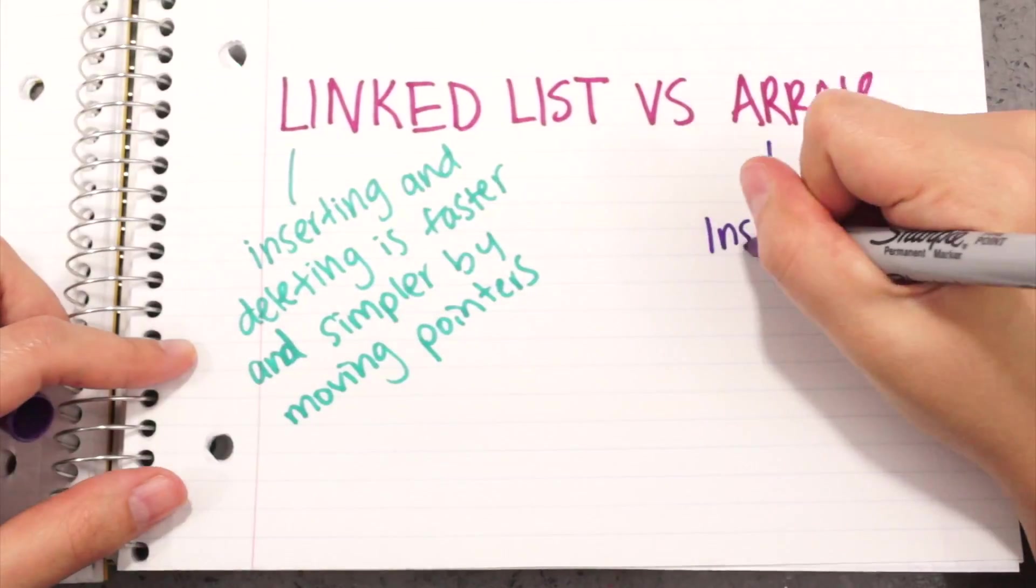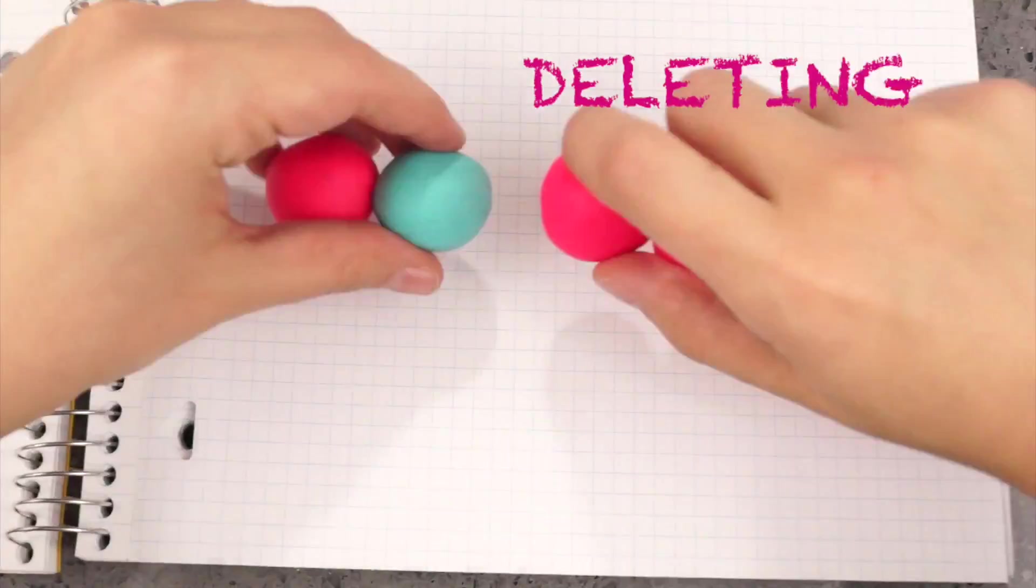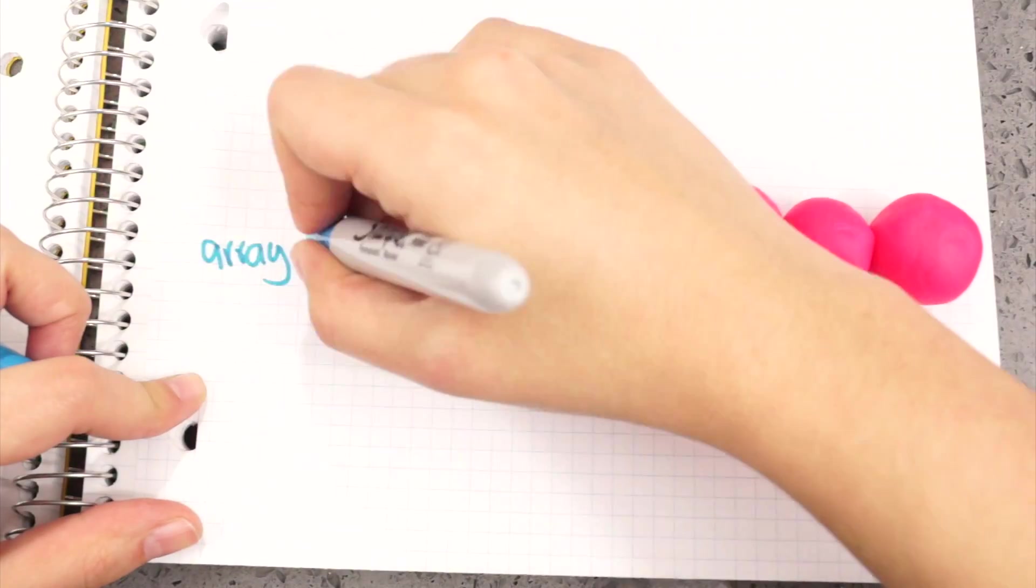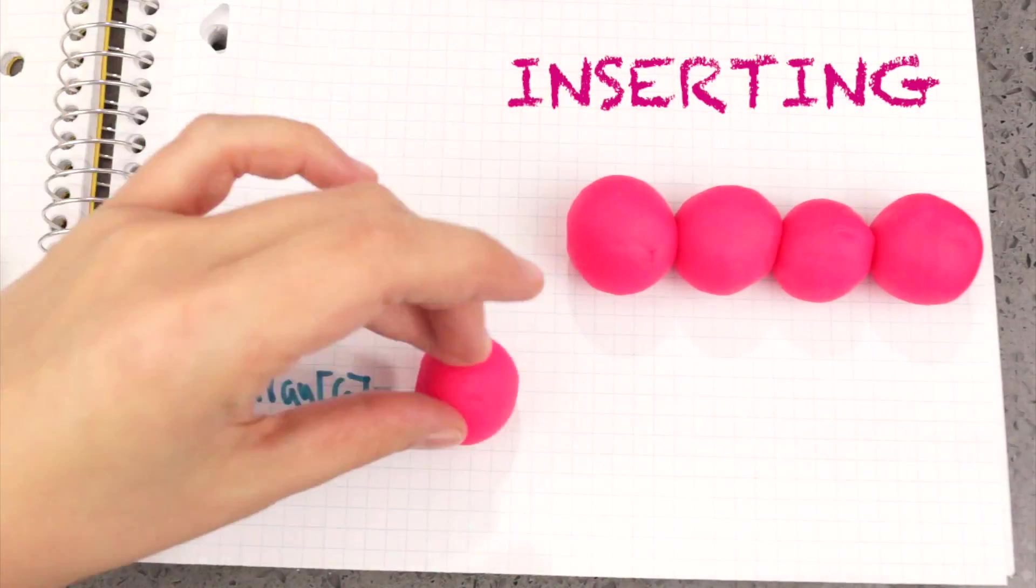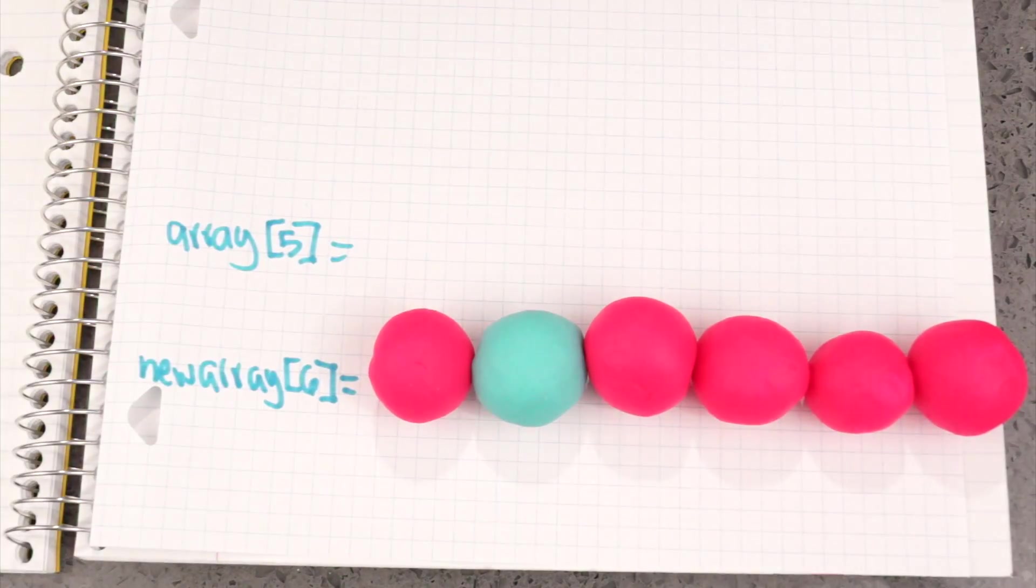With arrays, inserting and deleting is expensive because all items need to be moved. To delete an item, we have to shift every item after the deleted one. To insert an item, if the array is full, we'd have to create a new array and copy all of the elements plus the new one into the new array.